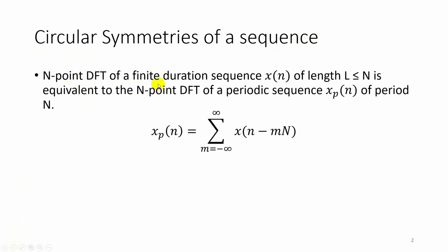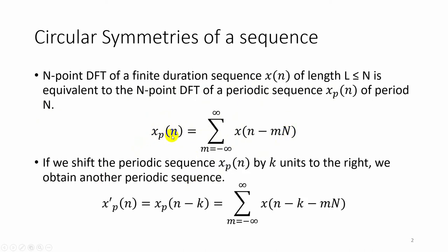We know that the N-point DFT of a finite duration sequence is similar to the N-point DFT of a periodic sequence. Here the periodic sequence is given by xp of n with period N, where xp of n is equal to the summation from m equal to minus infinity to infinity of x of n minus m times capital N. If we shift this periodic sequence by k units we will get another periodic sequence xp dash of n, equal to xp of n shifted by k units, represented by the summation of x of n minus k minus m times capital N.